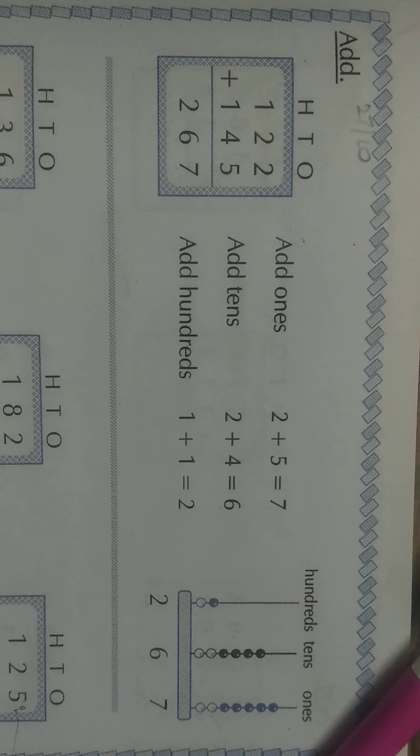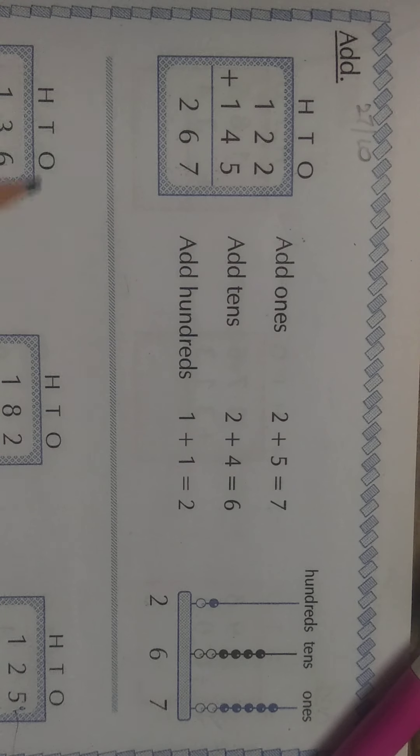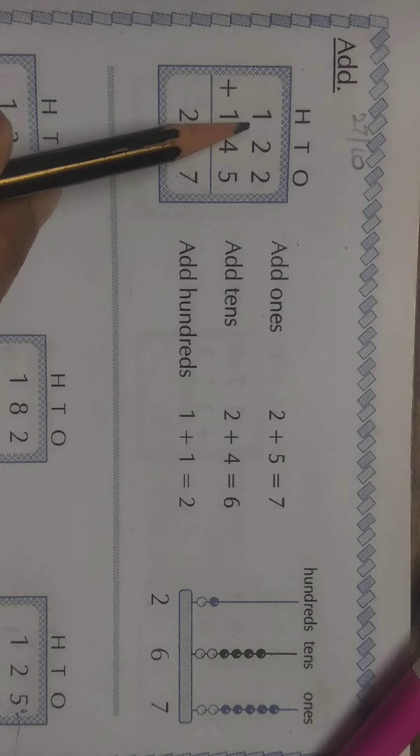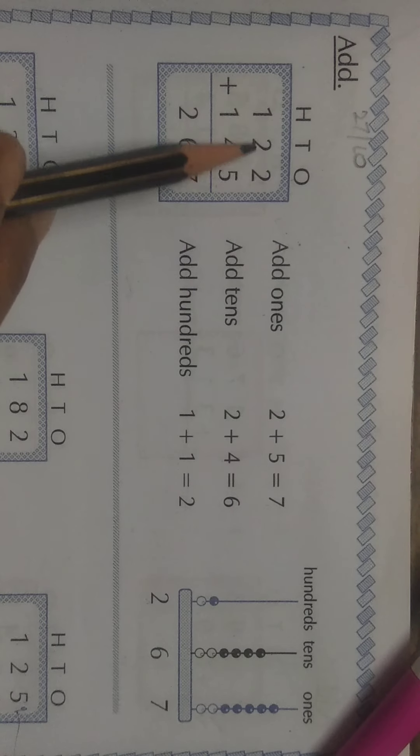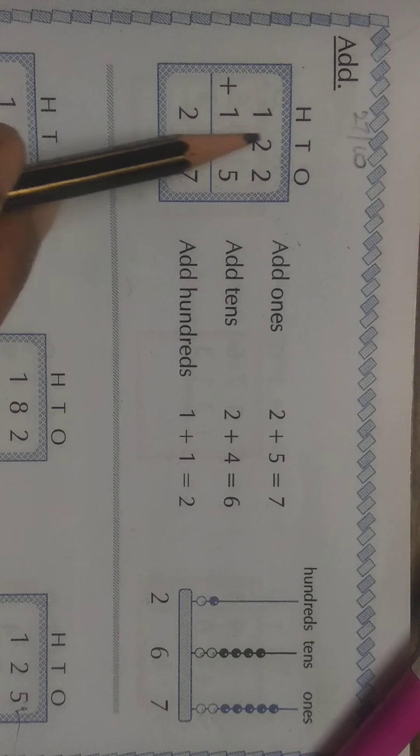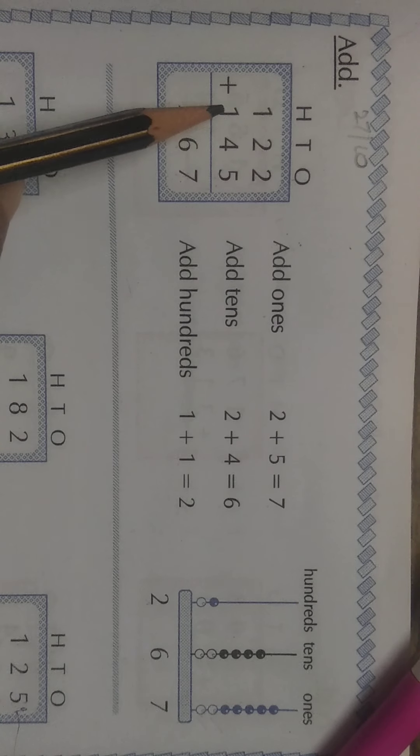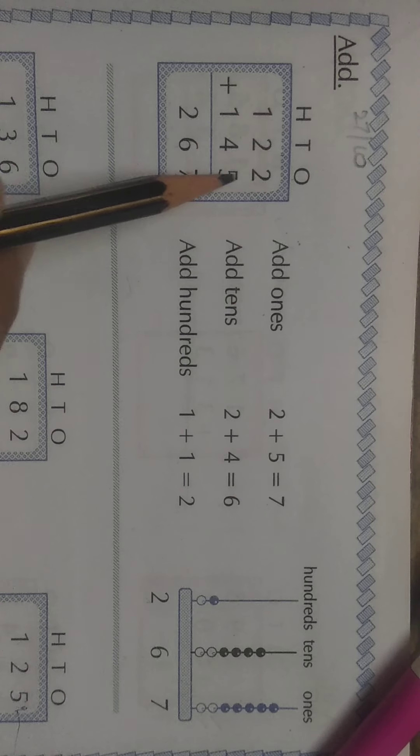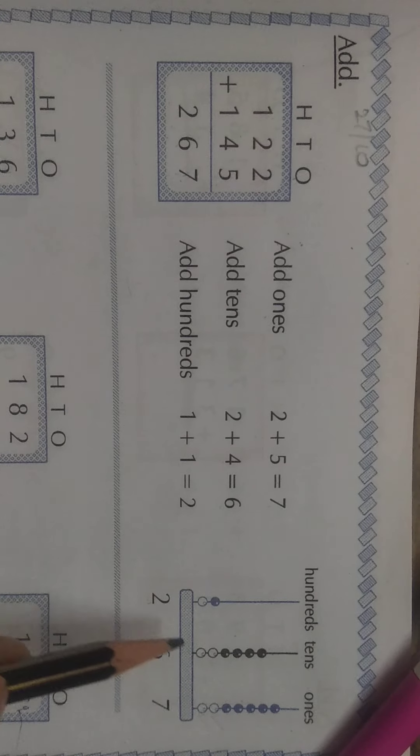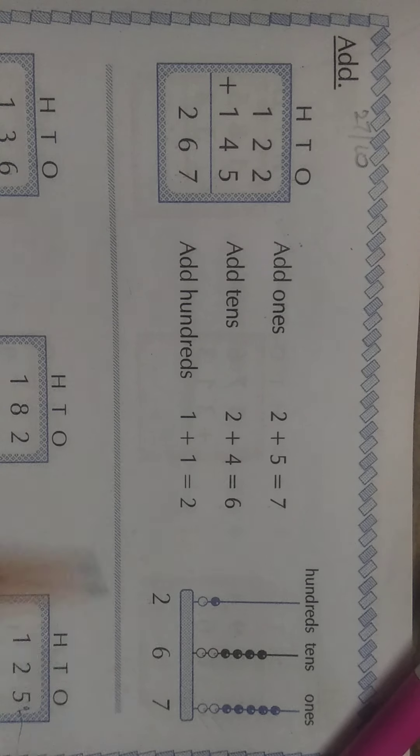So, in this exercise, you will practice the additions of three digit numbers. Look at this. 122. The first number in this sum is 122. So, second number is 145. 122 and 145 ko jodhenge. O bhi abacus ka help se jodhenge.